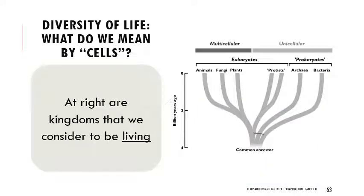Thinking about cells more broadly, it's helpful to look at the tree of life. Some organisms are inherently multicellular; some exist as single-celled entities. We're thinking about animals, fungi, plants, protists, archaea, and bacteria — all considered alive and all based on the unit of a cell. But there are some things that seem to be alive but are not, because they don't meet the requirements of cell theory.